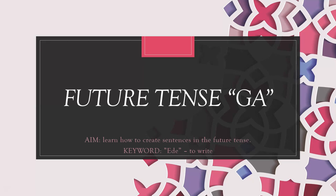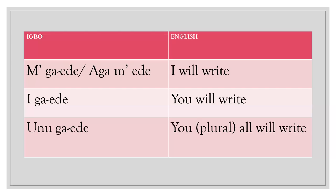The first one we have is 'ga-ede' or 'agam ede,' which means 'I will write.' Remember, our keyword for today is 'write' — 'ede.' That's what you're using to conjugate. This is a basic way of making sentences in the future tense; you can use 'play' or any other word. The major thing to know is the word 'ga' and the hyphen.